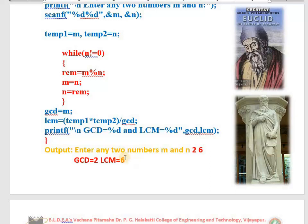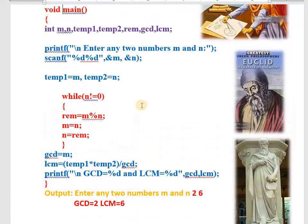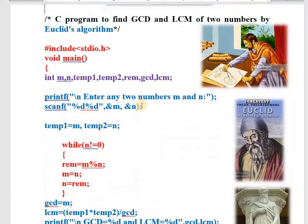How to develop this program? Before writing this program, first we need to understand that in the question they said you need to use one technique named Euclid's technique. Which technique do you need to use to find GCD and LCM? You need to make use of Euclid's technique only.